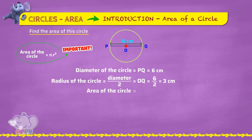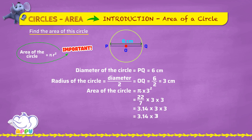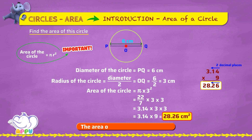Area of the circle equals pi times 3 squared, which equals 3.14 times 3 times 3, equals 3.14 times 9. So the area of the circle is 28.26 square centimeters.